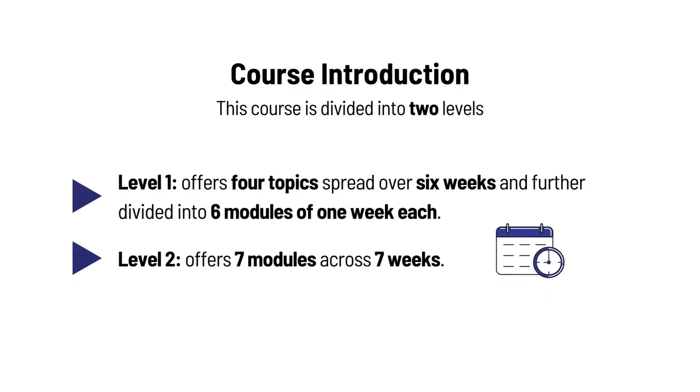The course is divided in such a way that learners must find it interesting and will be in a position to pursue it at their own pace. The goal of MOOCs courses, as you know, is that anyone can study from anywhere, anytime. This course is designed keeping engineers as the primary target — those who are studying and also those who are practicing. It is divided into two levels: Level 1 offers four topics spread over six weeks, divided into six modules of one week each. Level 2 offers seven modules across seven weeks.